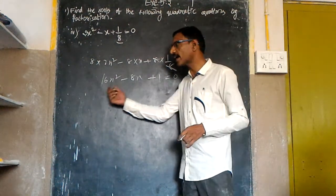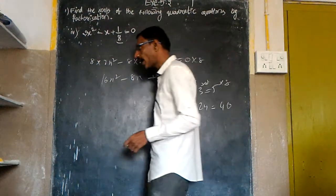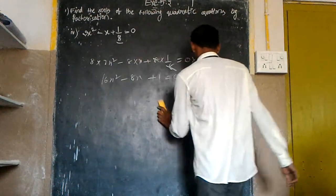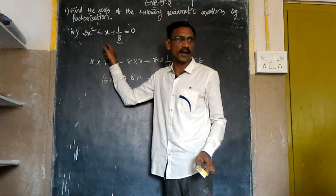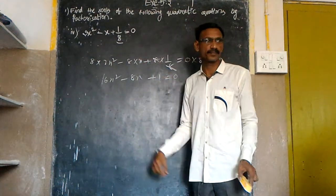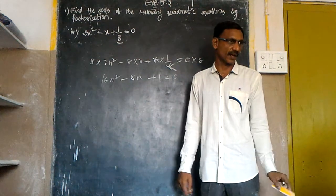Now we got a quadratic equation. Even it is a quadratic equation, to eliminate the 8 to get the splitting of the middle term.